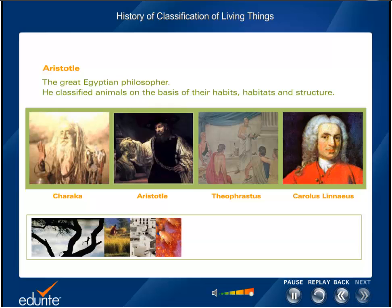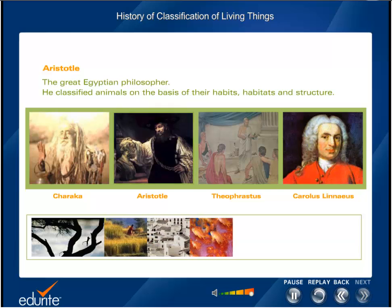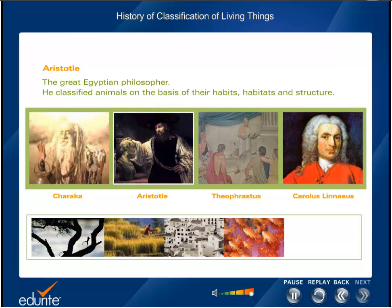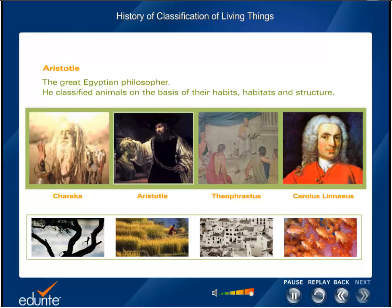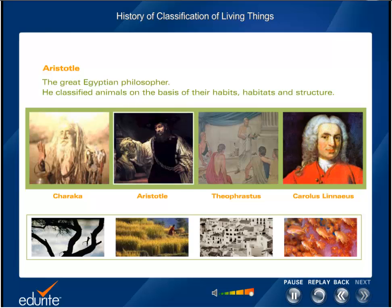Aristotle, the great Egyptian philosopher, made a very significant attempt in classifying living things. He and his pupils classified animals on the basis of their habits, habitats, and their external and internal structure.